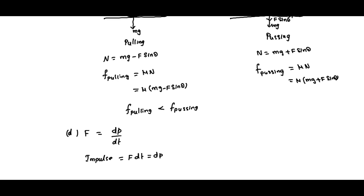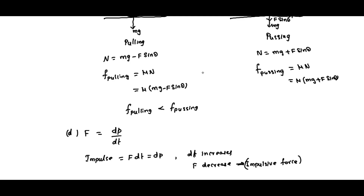While catching, the hands are moved backwards. By moving the hands backward, the time of catch increases — dt increases. As the time of catch increases, to keep the impulse the same, the force F decreases. This F is nothing but the impulsive force which causes the impulse. As the impulsive force decreases, the ball does not hurt the cricketer.